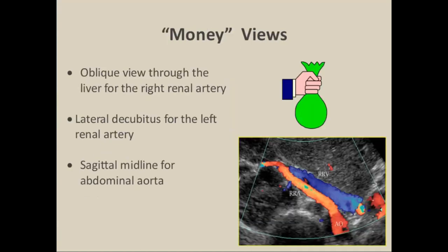I call these the 'money views' — the views that allow you to get maximum information in a short period of time. The money view for the right renal artery is typically the patient slightly right-side-up, scanning through the liver. Here we can see the right renal artery in its entirety — right from the origin at the aorta into the hilum of the kidney. From this one view, we can sweep the sample volume and angle-correct the direction of flow through the artery, capturing peak systolic velocities for evaluation.